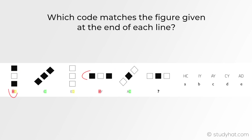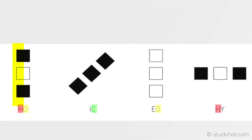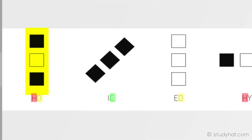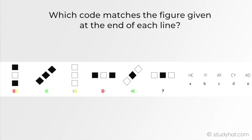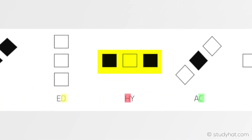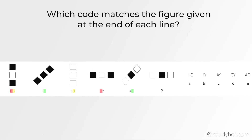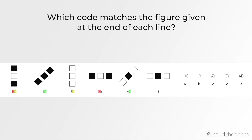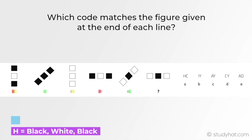Let's start with H. We need to find what these two shapes have in common. It can't be direction since they are both facing differently, but what I noticed is the shading. It has a specific pattern that is in both — black, white, black. So we can note that H stands for black, white, black. This also means that the first letter represents shading.